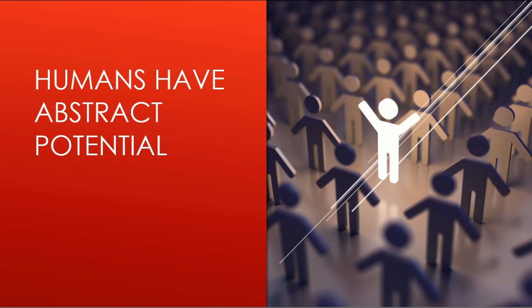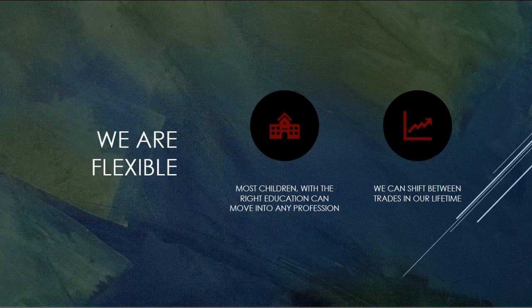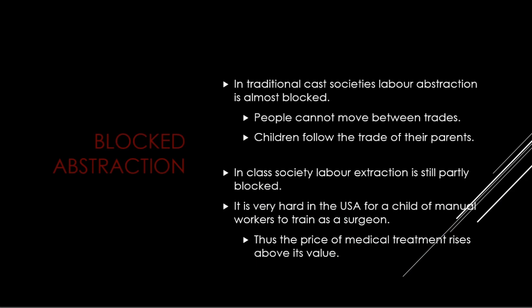On the other hand, humans do have abstract potential, because we're flexible. Most children with the right education can move into any profession — we're not saying every child can, and there are some children with learning difficulties — but the great majority can be directed into different professions with the right education, and people can shift between trades in their own lifetime. This abstraction is actually blocked in some societies. In a traditional caste society, labour abstraction is almost totally blocked — people can't move between trades.